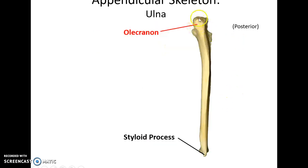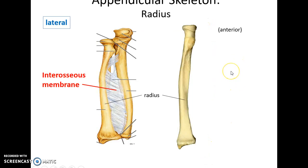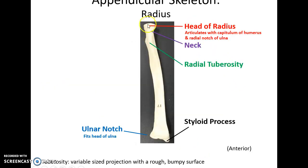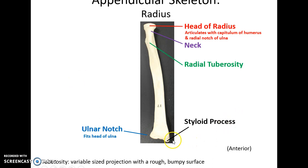Flip it over posterior. This large portion that sticks out is the olecranon. Go down to the distal end — this little point is the styloid process. In the lateral bone, the radius: the cylindrical portion at the proximal end is the head of the radius. Below that is the neck of the radius. This large bump sticking out is the radial tuberosity. Go down to the distal end — there's a little depression on the medial side called the ulnar notch, and then a little point sticking down called the styloid process.